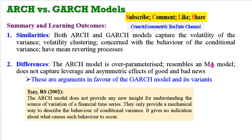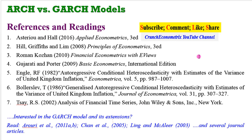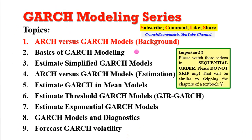I'll wrap up this session by summarizing the learning outcomes. Similarities: both ARCH and GARCH models capture the volatility of the variance, volatility clustering, the behavior of the conditional variance, and both have mean-reverting processes. The differences: the ARCH model is an over-parameterized model, resembles a moving average model, and does not capture leverage and asymmetric effects of good and bad events — these are arguments in favor of the GARCH model and its extensions. Video tutorials are insufficient — please support them with reading. I have provided some references; please read at least one or two of these resources.